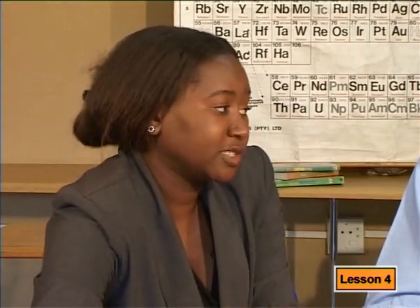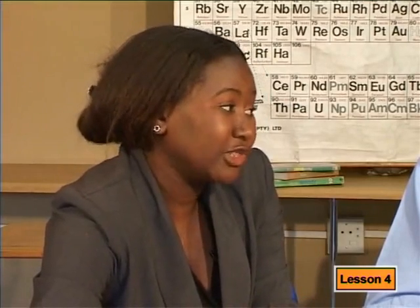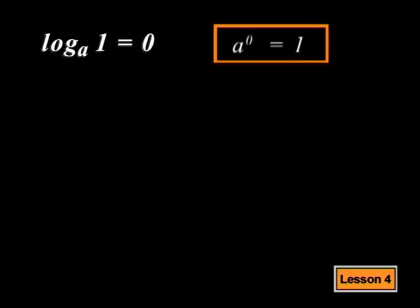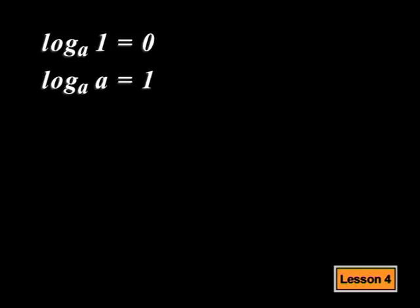The first log law says that log of 1 is always equal to 0. And this makes sense as anything to the power 0 is equal to 1. The second law is that if the base and the number of a log are the same, the log is equal to 1. If we convert this log into exponential form, we see that this is true according to the laws of exponents.